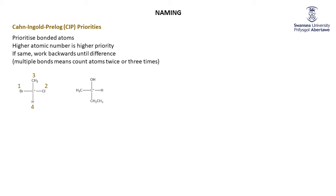Here's another example — pause and practice it yourself. We have oxygen, carbon, carbon, and hydrogen. Oxygen is obviously the highest priority and hydrogen is the lowest. Now, how do we decide which carbon group has the higher priority? We look at the methyl group — that carbon is bonded to three hydrogens. The other carbon is bonded to two hydrogens and another carbon. Since that second carbon has a carbon attached rather than just hydrogens, the ethyl group is second priority and the methyl group is third.